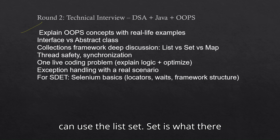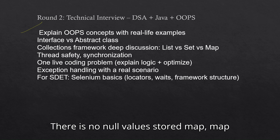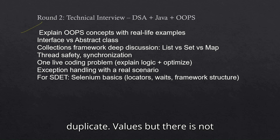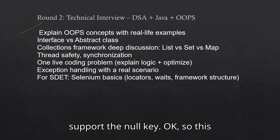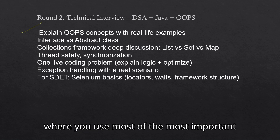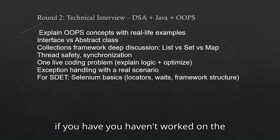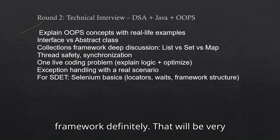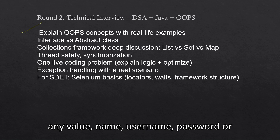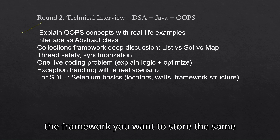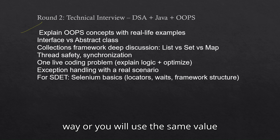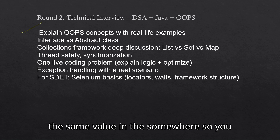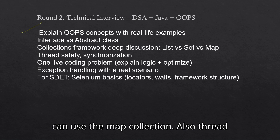For Set: there is no indexing, data is stored without null values. For Map: it is key-value based — you can store multiple values but it does not support null keys. A very important follow-up they ask is why you are using a particular collection and whether there is an alternative approach. For Map in particular: whenever you want to store a value like a username or password in your framework and reuse it in another step, you use Map — store with a key, retrieve it later. For synchronization, waits are very helpful: implicit wait, explicit wait, and fluent wait. They ask which wait you use most frequently and which is most powerful in your framework.